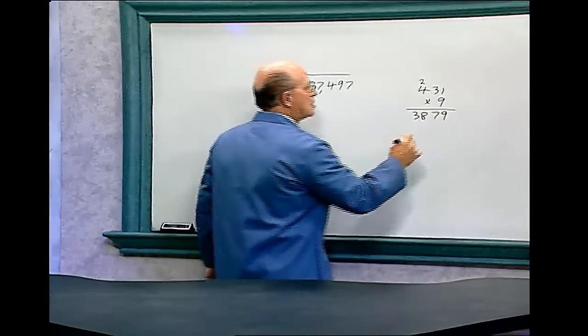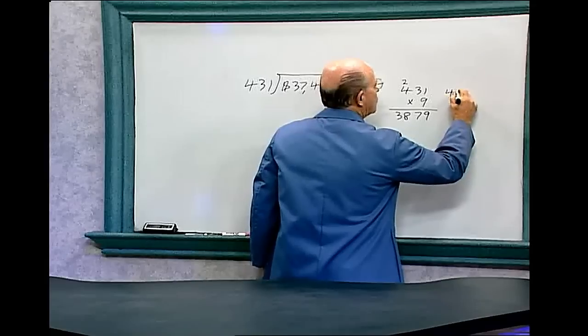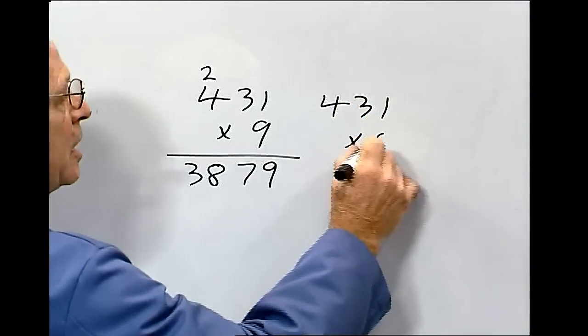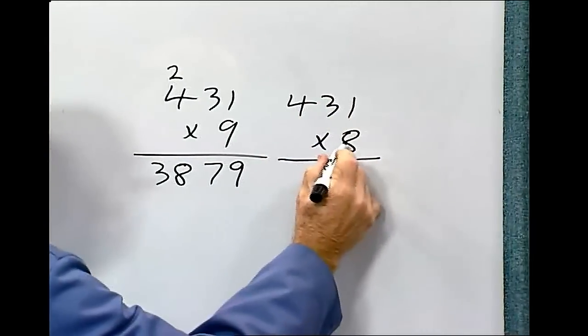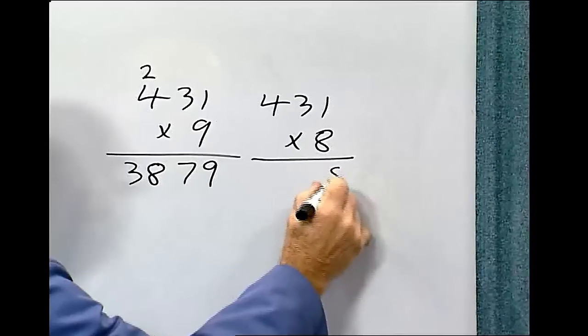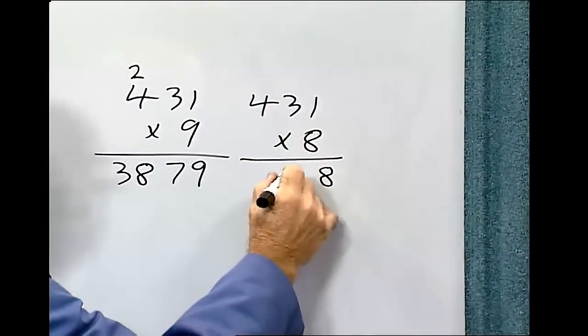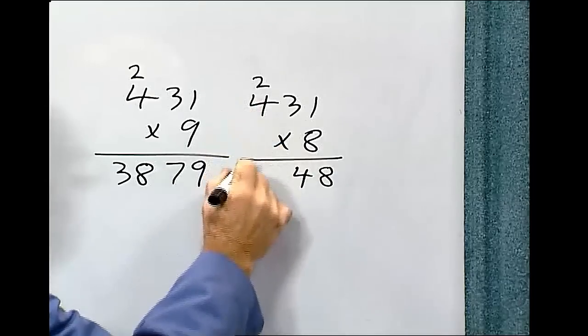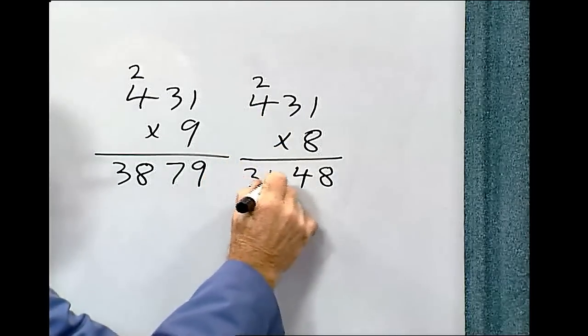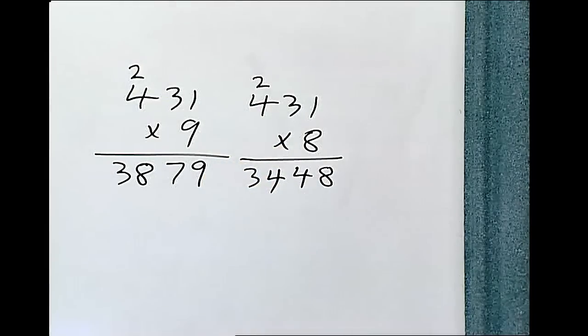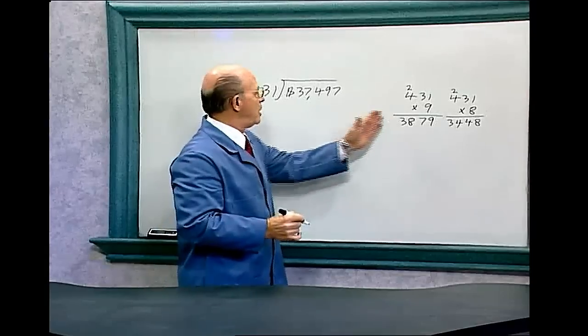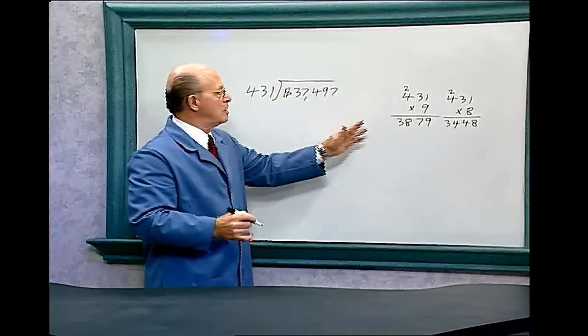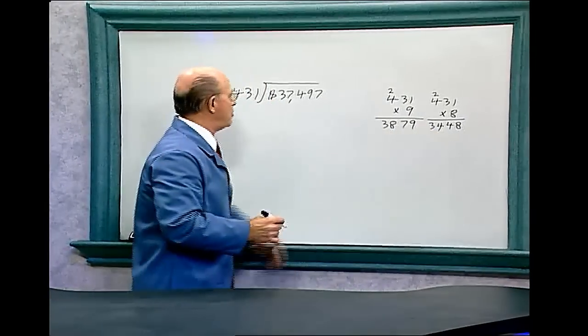So let's try 8. 431 times 8: 8 times 1 is 8, 8 times 3 is 24, 8 times 4 is 32, plus 2 is 34. And you can see the advantage - by me doing the math over here, I didn't have to erase over here. Now all I have to do is transfer this number.